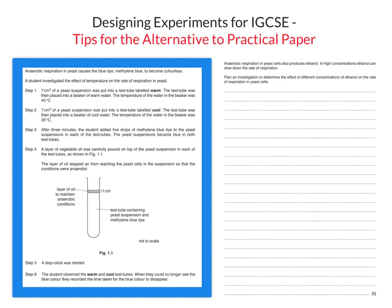Hello everyone. In this video I'm going to be giving a few tips for the alternative to practical paper that features in the IGCSE specification. Specifically we're going to be looking at the question where you're asked to design an experiment. I've taken this from the 2019 alternative to practical paper, and as you can see at the bottom right corner, it's worth six marks.